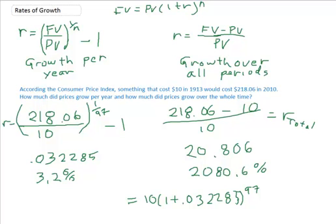So 10 times 1 plus 0.032285, probably didn't have to carry it out that many spaces but I felt like it, to the 97th power. And I calculate 218.0534.